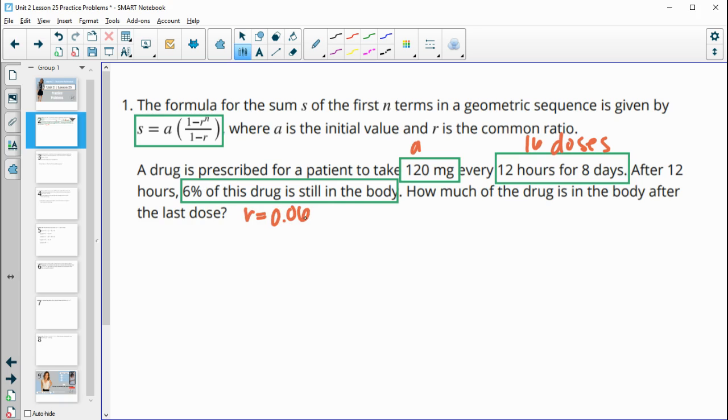Remember we need to write the percent as a decimal. So then we're just going to plug this into our equation here. So the initial amount that's taken is 120 milligrams, then we do one minus the rate, so 0.06 to the 16th, and then over one minus 0.06.